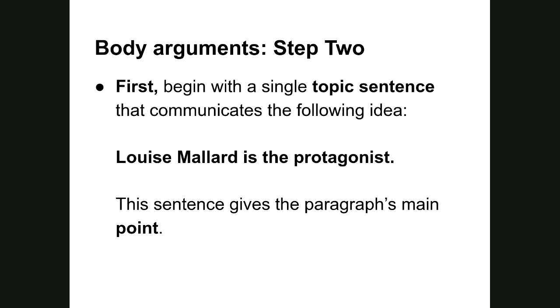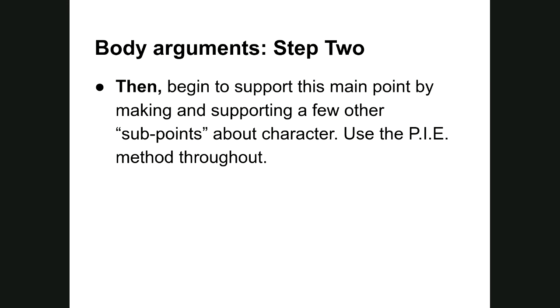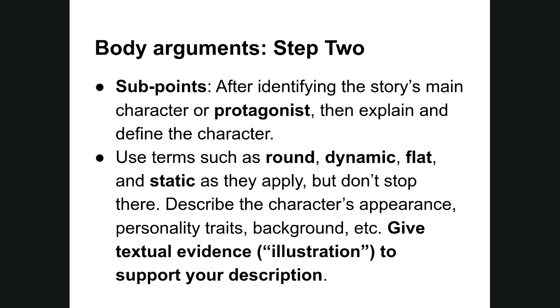Next, we dig into defining the protagonist using terms and concepts from the character video presentation. These take the form of sub-points. After identifying the protagonist, we apply certain definitional terms: round and dynamic, or flat and static. We need to address these sets of terms, and we could also describe the character in other ways — appearance, personality traits, background — though the main goal is to determine whether the character is round or flat first, then dynamic or static.